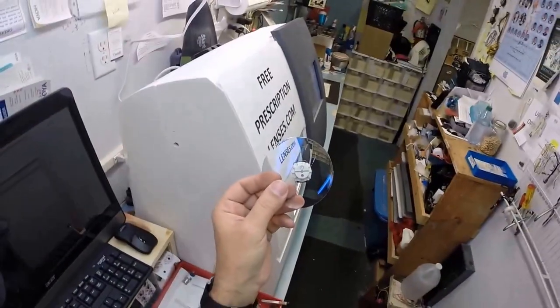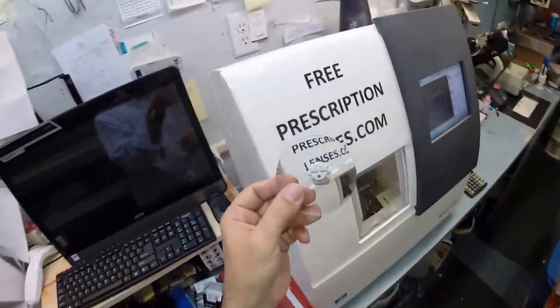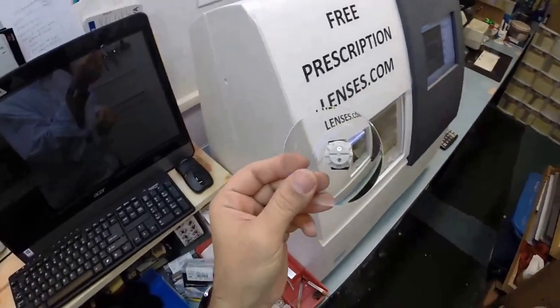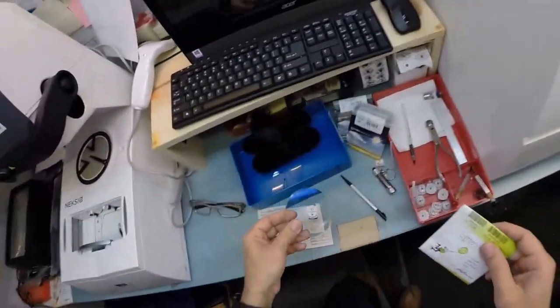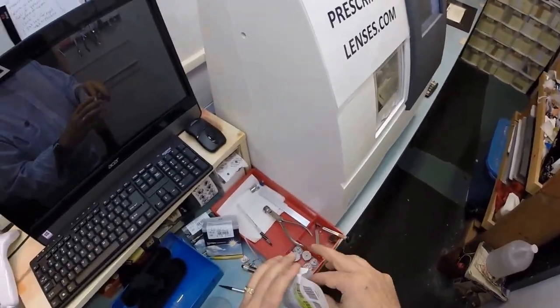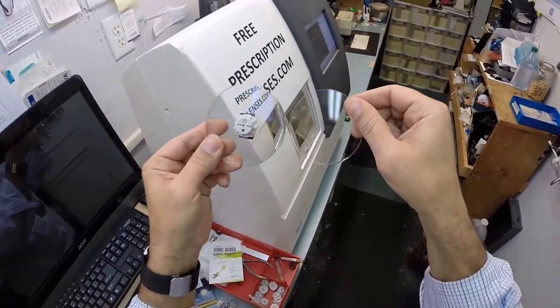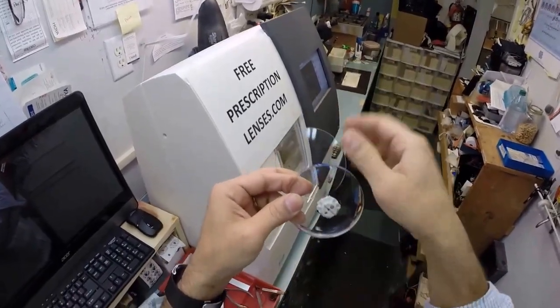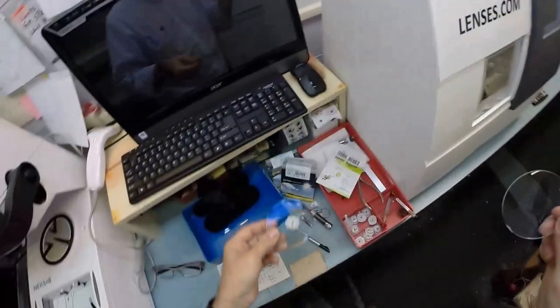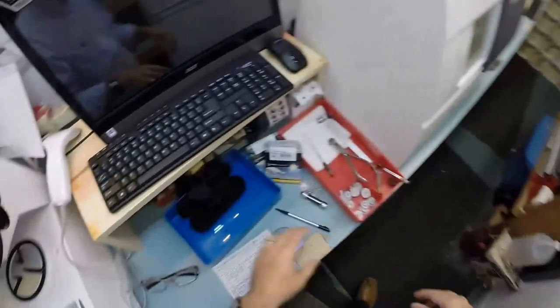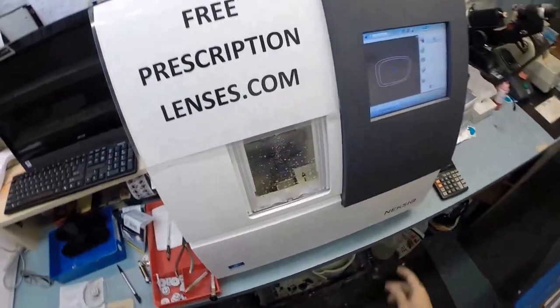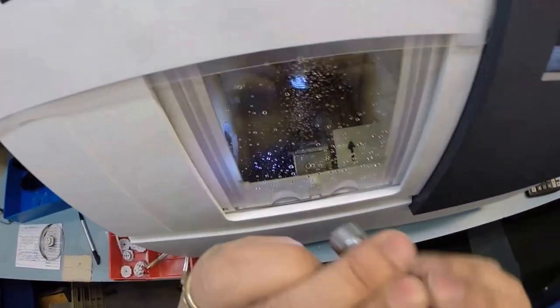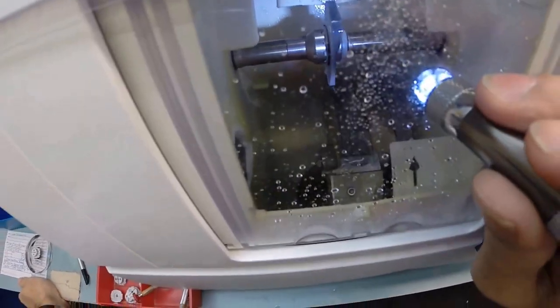You also have Crizal Avance anti-glare coating which does three things. The first feature eliminates glare when driving at night, particularly in the rain, and reduces glare from streetlights, computer screens, overhead fluorescent lights. The second feature is anti-reflection, so when someone's looking at you they see your eyes, not reflections. The third feature comes with the strongest scratch coating in the business.